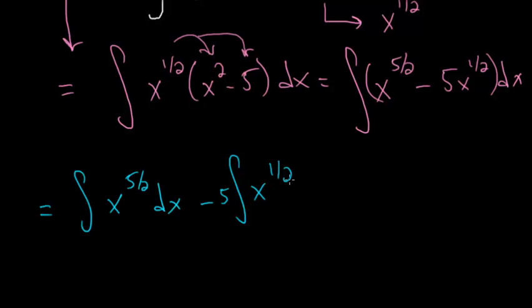Times x to the one-half dx. Now we can integrate each of these using the power rule for integration. If you have x to the n and you integrate that, the exponent is increased by one, and you divide by this new exponent.